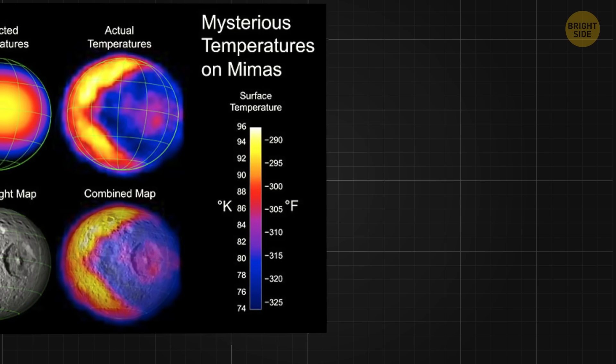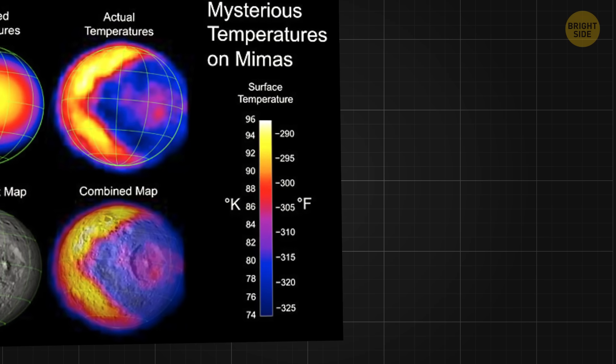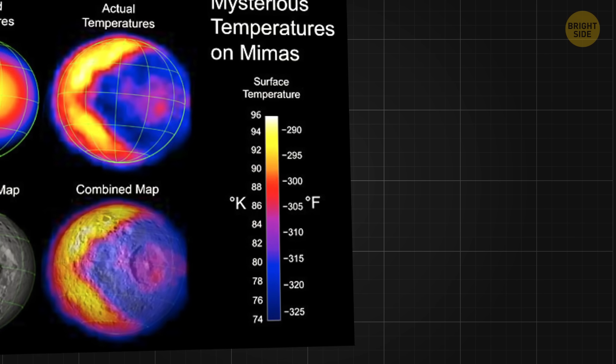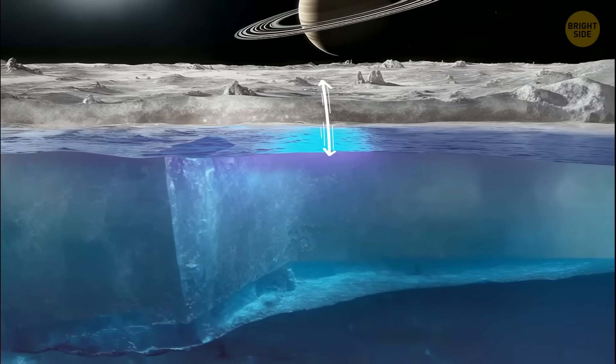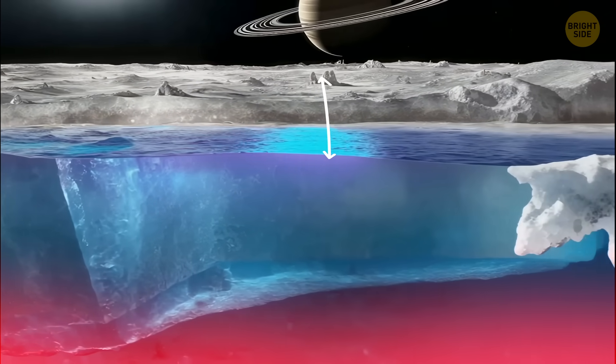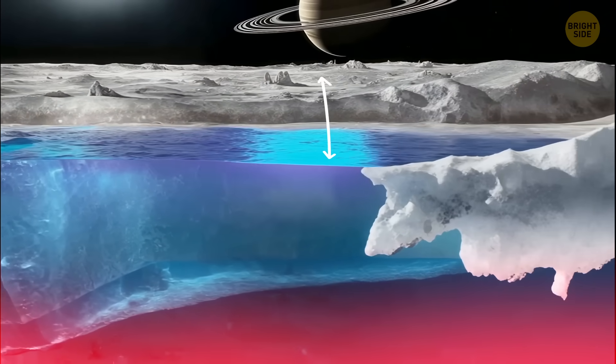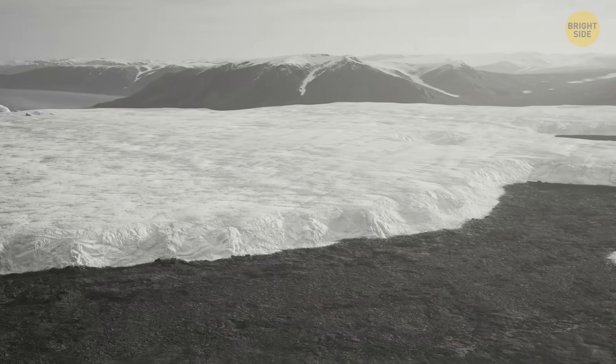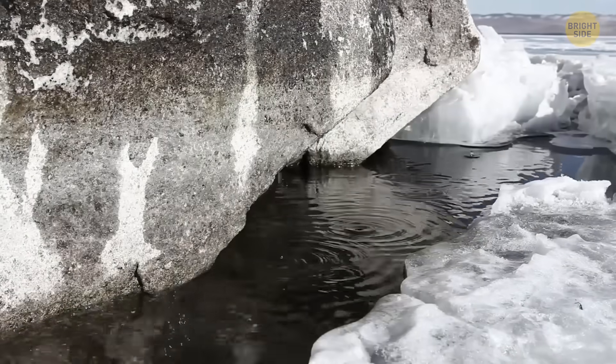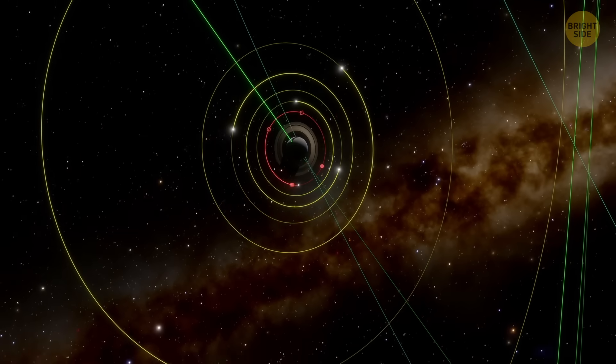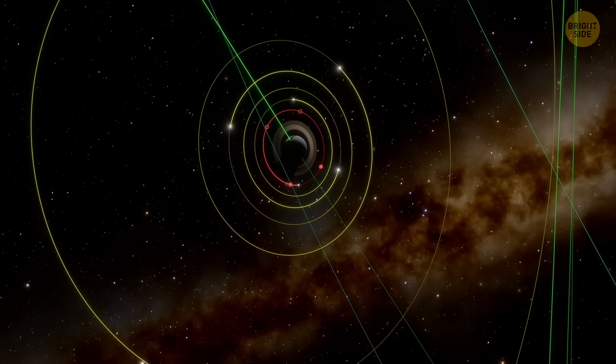Scientists used models originally made for Europa to figure out how heat moves through Mimas's icy shell. They wanted to know how thick it was, how much heat it could trap, and whether it could melt ice below. And they found that once melting starts on Mimas, it doesn't stop. It accelerates, and really quickly. All that melting ties back to Mimas's orbit.